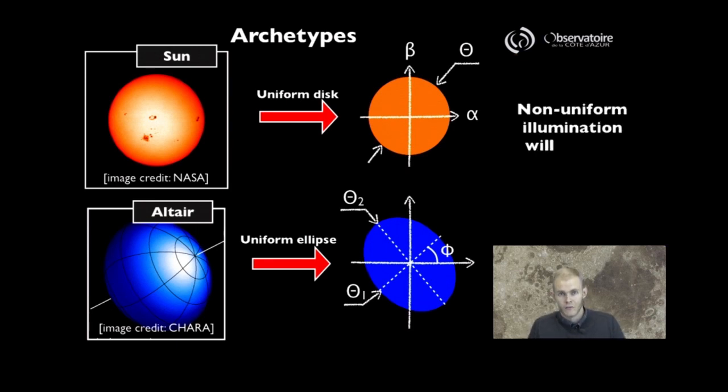The actual pictures of these objects feature some non-uniformities. We also introduced this very simple limb darkening model that described the fact that the sun is brighter toward the center than at the edges, or things like the von Zeipel effect that described the fact that a fast rotator is brighter near its pole than near its equator.